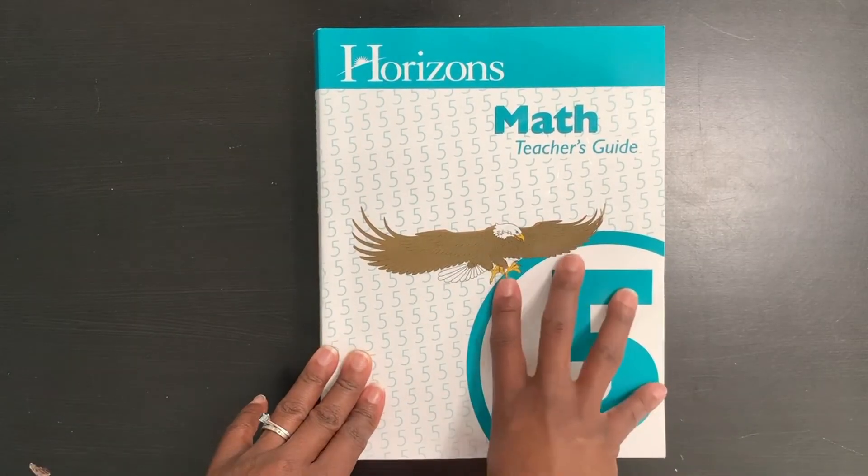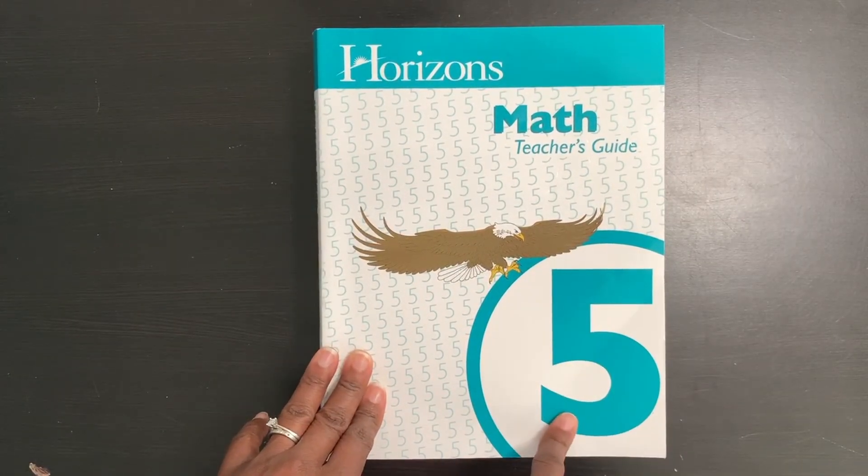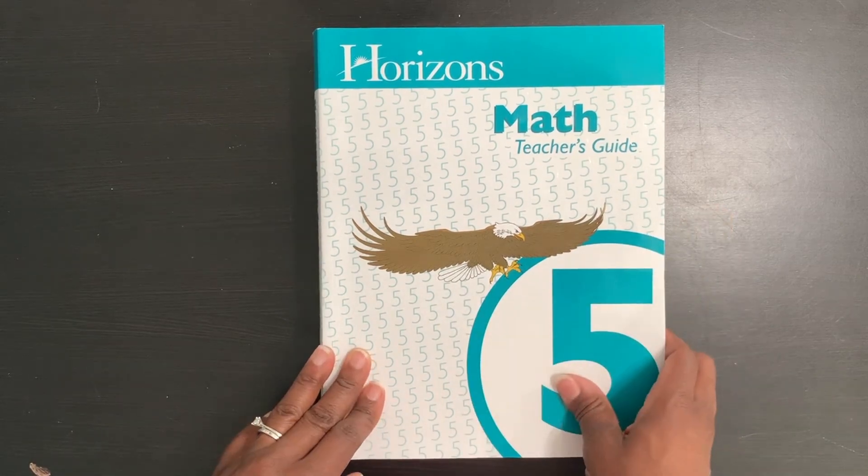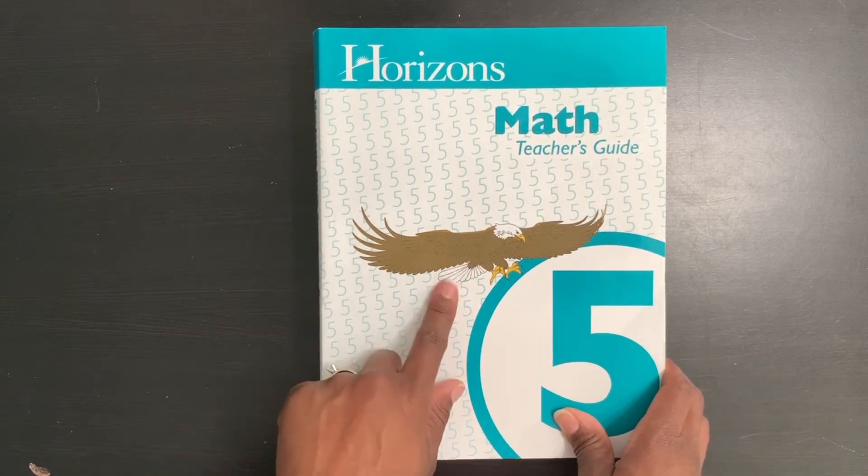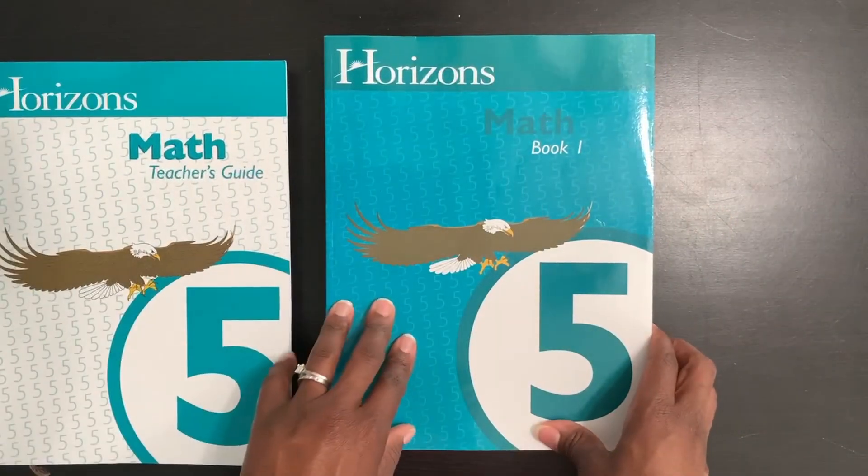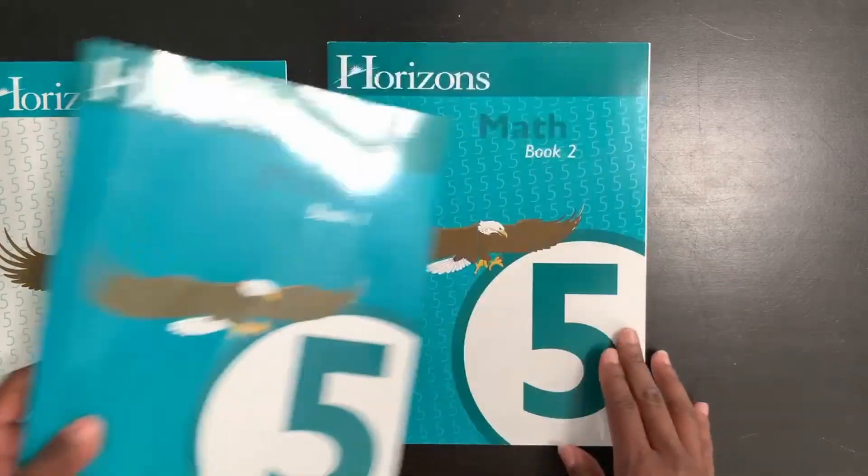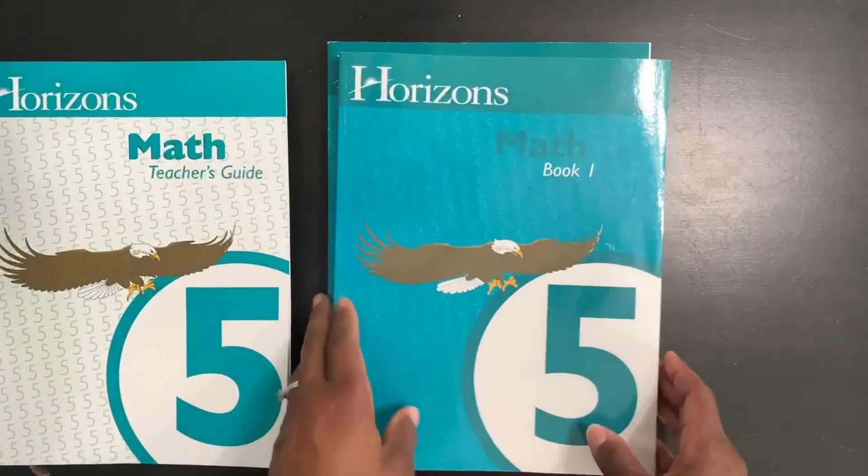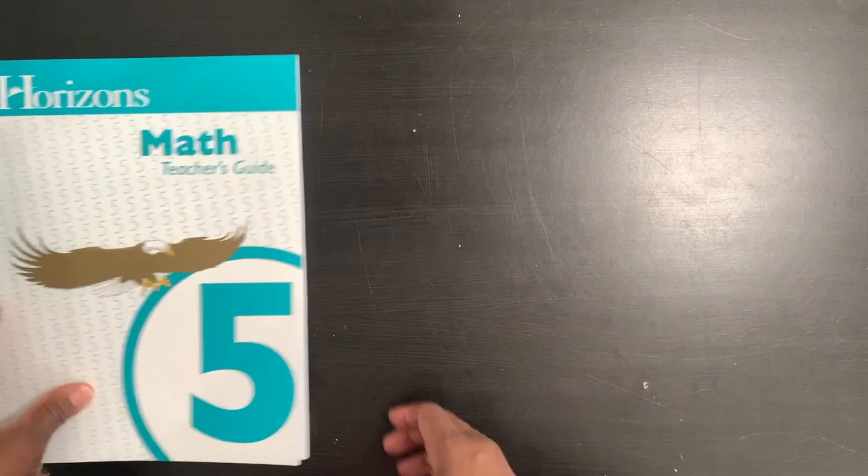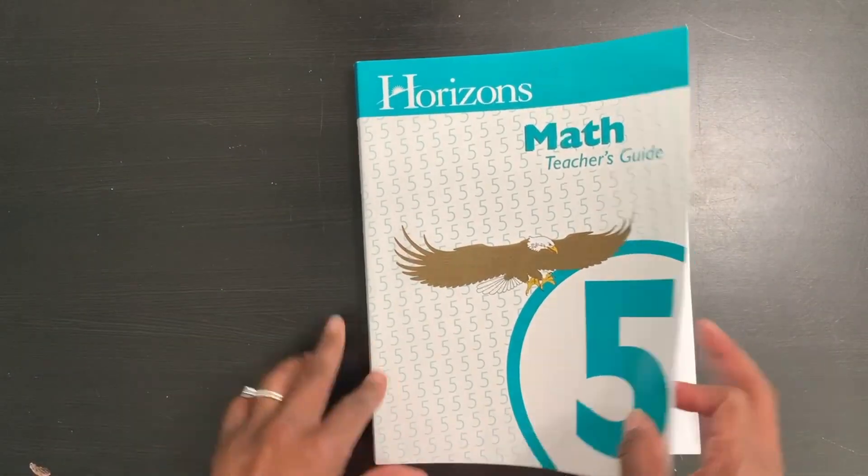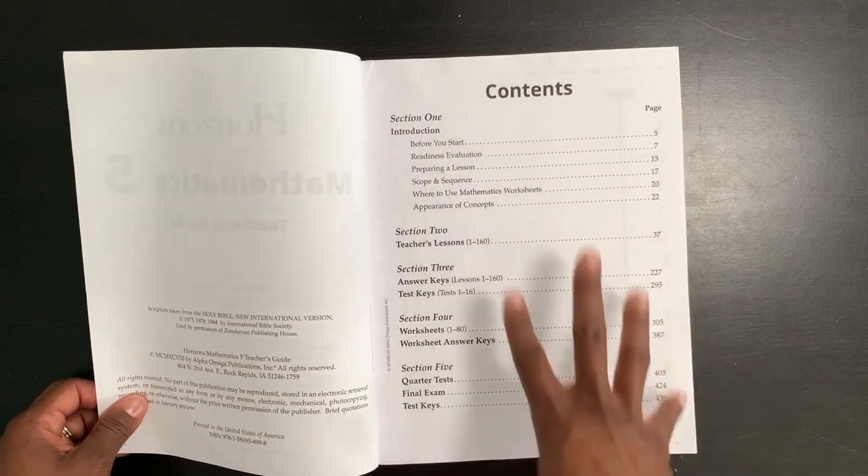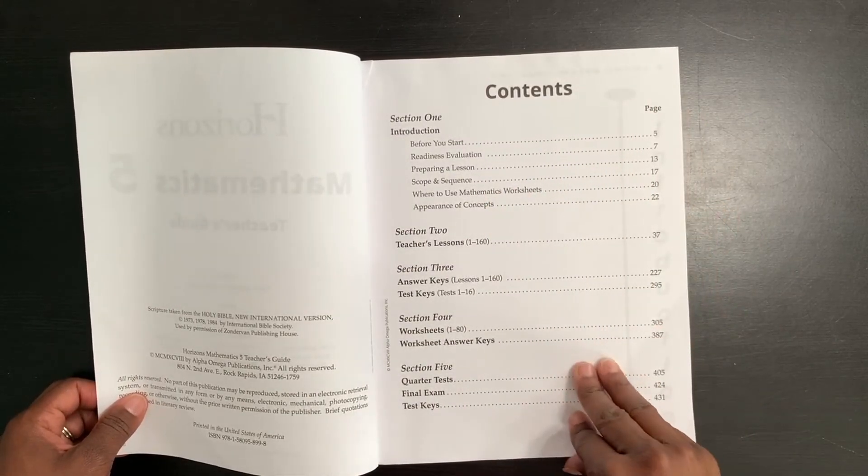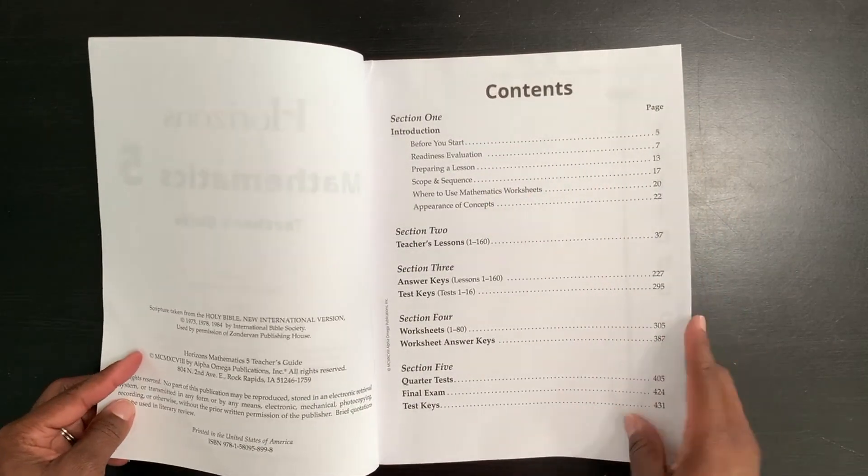Hello everyone, let's talk about Horizons Math Level 5. I'm going to give you guys a flip through. When you get the Horizons curriculum, you are going to get your teacher's guide. You will also get Horizons Math Book 1 and Book 2 and I'm going to give you a look into those in just a moment. Here is your teacher's guide. When you open up the teacher's guide, it gives you your contents of everything that is located within this teacher's guide and I'm going to show you all of it.